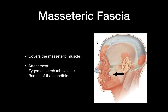The next fascia is the masseteric fascia. It covers the masseter muscle, hence the name. The masseteric fascia attaches at the zygomatic arch, above the zygomatic arch, and then attaches to the ramus of the mandible.